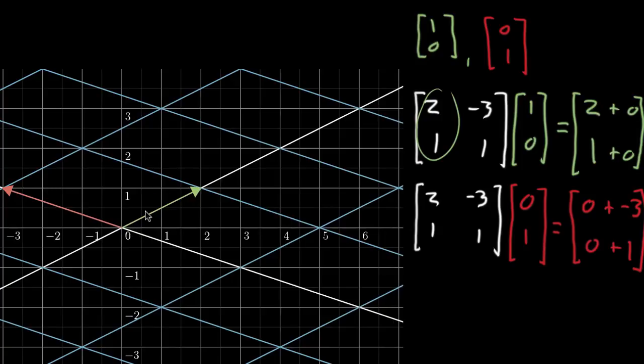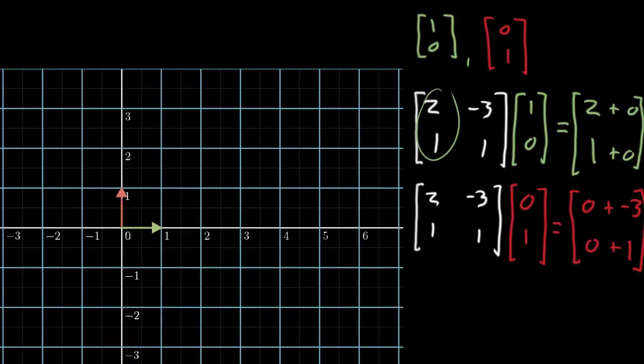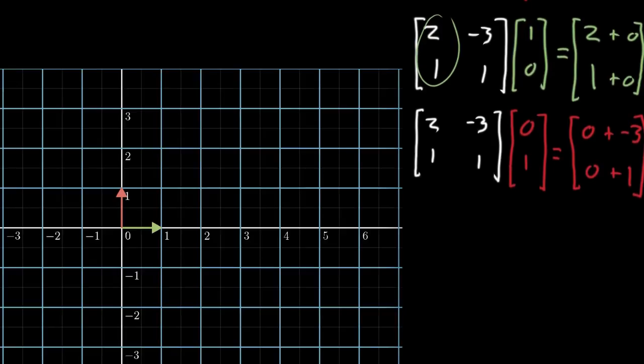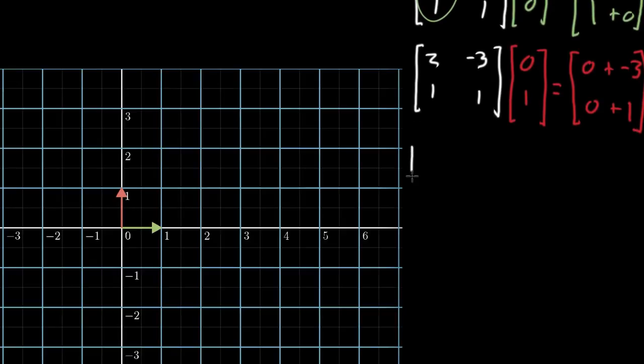And when you start to think about it a little bit, if you can know where this green vector lands and where this red vector lands, that's going to lock into place where the entire grid has to go. And let me show you what I mean and how this corresponds with maybe a different definition that you've heard for what linear transformation means.